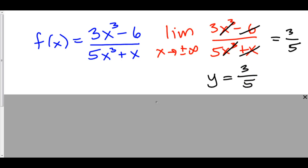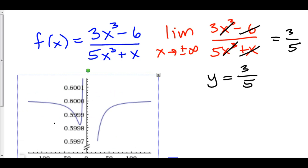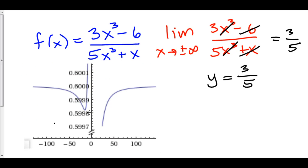If you want to see the graph of this, here it is on Wolfram Alpha. We can see that as x goes to infinity, we seem to be approaching 0.6, which is 3 over 5. And as we go off to negative infinity, we seem to be approaching 0.6 again, which is also 3 over 5.